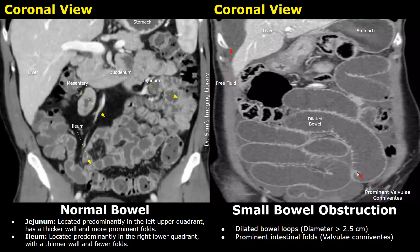These two features indicate small bowel obstruction, and if no other cause is seen such as a volvulus, an intestinal tumor, or a hernia, then the cause is an adhesion.